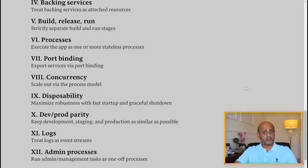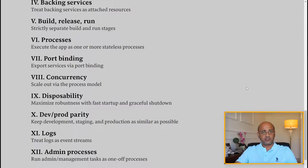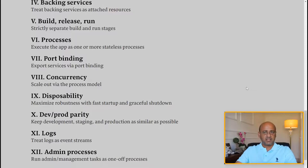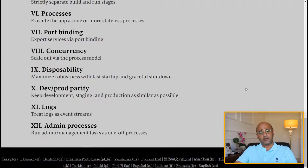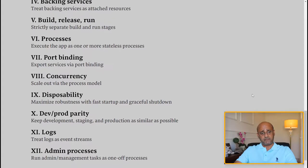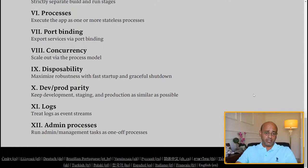Factor eight is concurrency: scale out by the process model. Check out my videos on the process model — you want to be able to scale out using it. Factor nine is disposability, which is to maximize robustness with fast startup and graceful shutdown — straightforward.